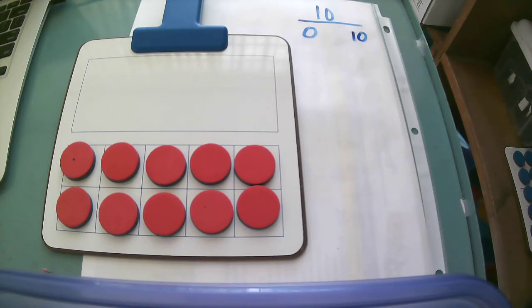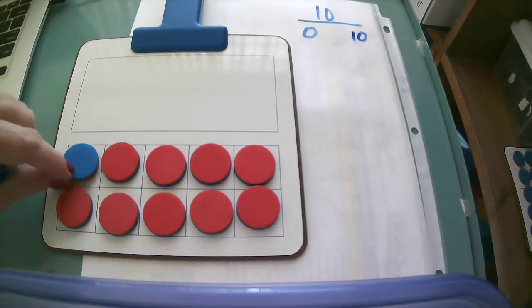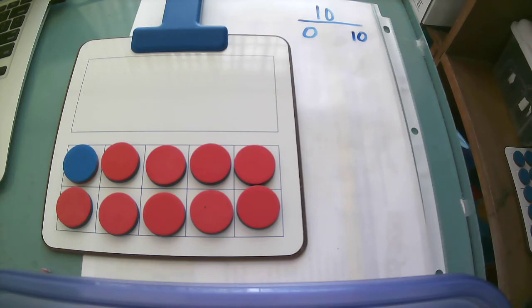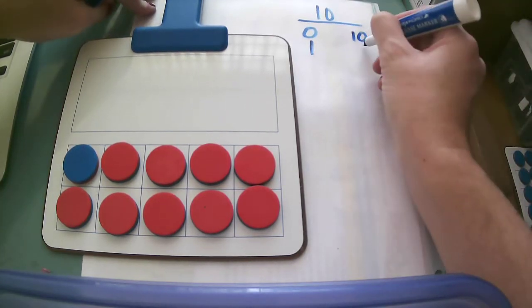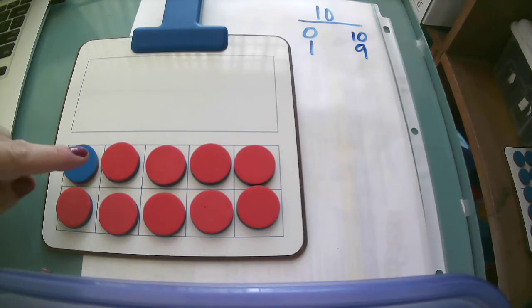But this time I'm gonna flip one of those over and now I have one blue and I have nine red. One, two, three, four, five, six, seven, eight, nine.